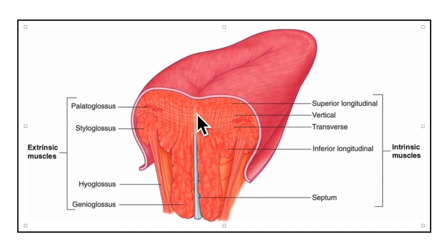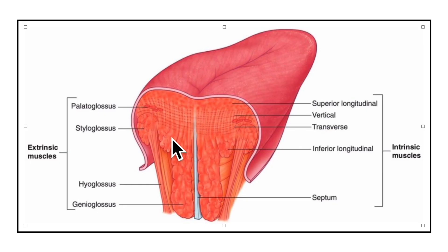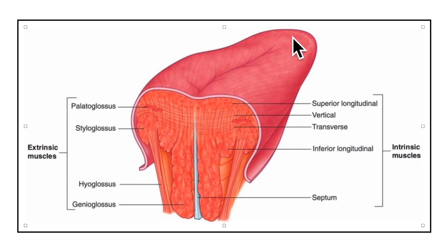A middle fibrous septum divides the tongue into right and left halves. Each half contains four intrinsic and four extrinsic muscles. The intrinsic muscles occupy the upper part of the tongue and are attached to the submucous fibrous layer and to the median fibrous septum. They alter the shape of the tongue. The four intrinsic muscles are the superior longitudinal, the inferior longitudinal, the vertical muscle, and the transverse muscle.